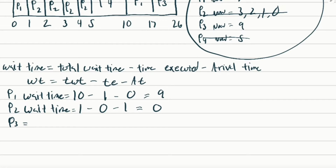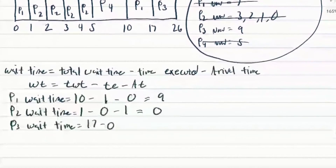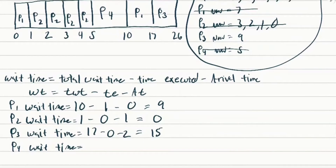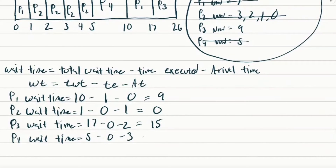P3's wait time: P3 had to wait until time 17 to start executing, so total wait time is 17. Before that, P3 didn't execute at all, so minus 0. Minus arrival time of 2 — that gives us 15. P4's wait time: total wait time is 5, minus 0 time executed, minus arrival time of 3 — that equals 2. Adding all wait times: 9 plus 0 plus 15 plus 2 equals 26. Divided by 4 equals 6.5 milliseconds.